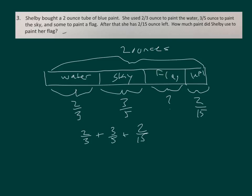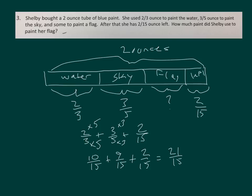So we have two-thirds — let's go to fifteenths. That's ten-fifteenths times three, plus nine-fifteenths, plus two-fifteenths, which is twenty-one-fifteenths. Two ounces is thirty-fifteenths. So we get thirty-fifteenths minus twenty-one-fifteenths, equaling nine-fifteenths — the amount she used to paint her flag. Shelby used nine-fifteenths of an ounce to paint her flag.